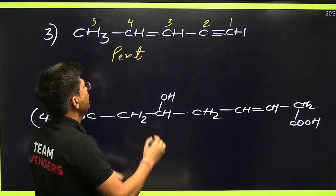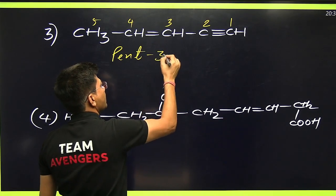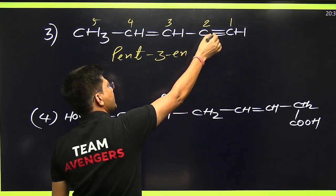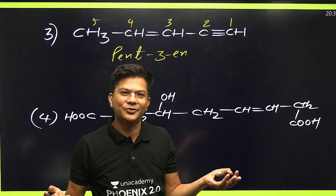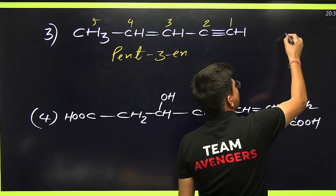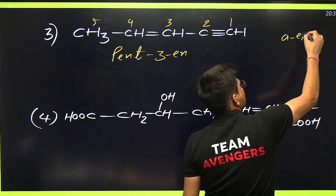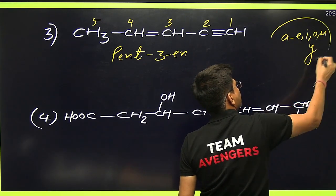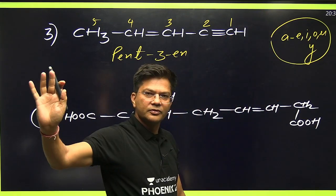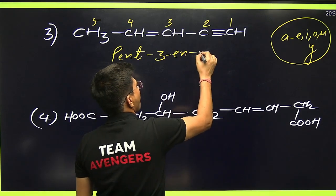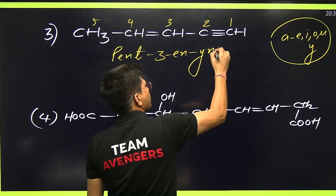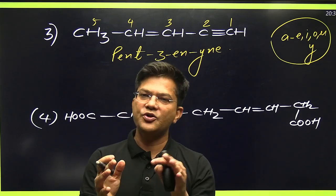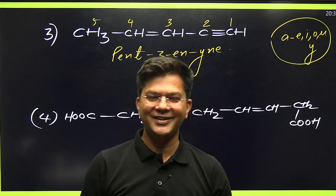While writing the name, we will not write the 'e' before 'en' because that 'e' is a vowel — and 'y' is also treated as a vowel. As you know: a, e, i, o, u, y — these are all treated as vowels. So we drop the terminal 'e' before a vowel suffix. I hope this is very clear to all my dear friends.